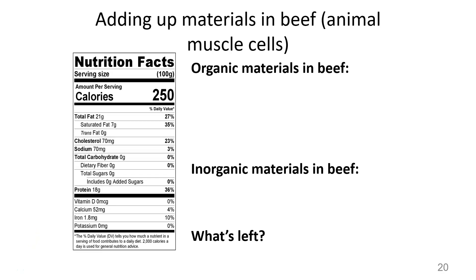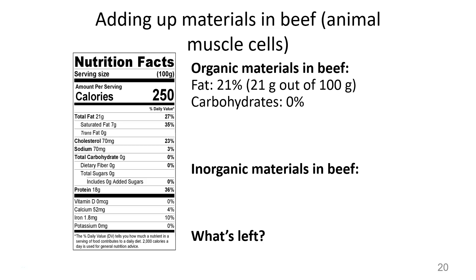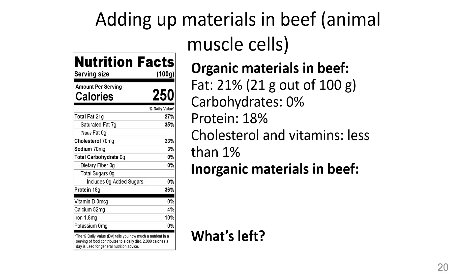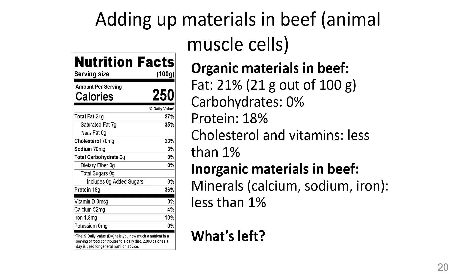Let's see how animal cells compare to plant cells. Here's a nutrition label from beef — beef is made of animal muscle cells. Going through the same process: 21% fat, 0% carbohydrates (though there are some, just less than 1%), protein 18%, cholesterol and vitamins less than 1%, inorganic materials less than 1%. What's left over? 60%. So water makes up about 60% of an animal cell.